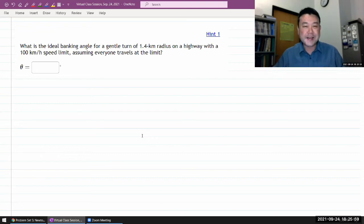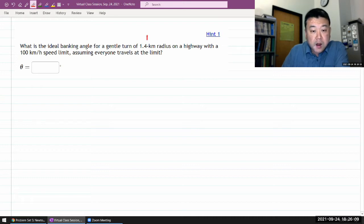Alright. So the question says, what is the ideal banking angle for a gentle turn of 1.4 kilometer radius on a highway with 100 kilometers per hour.